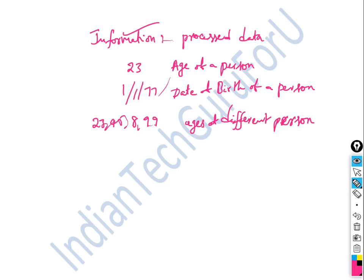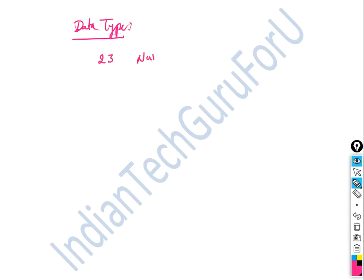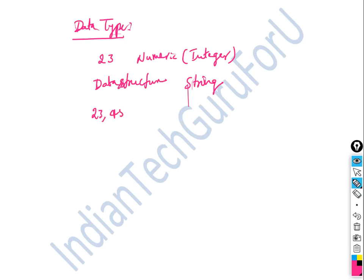Here we have definitions. The main definition: data type. For example, a string is a data type — a data structure. Another example: 23, 45, 7, 92 — these values form an array of integers, which is also a data type.